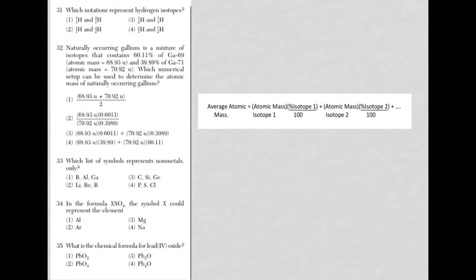Let's take a look at questions 31 through 35 from the June 2016 Chem Regions Exam. Question 31 asks which notations represent hydrogen isotopes. You need to know the definition for an isotope: same number of protons, different number of neutrons.